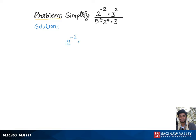To simplify 2 to the negative 2 times 3 squared divided by 5 to the negative 1 times 2 to the 4th times 3.